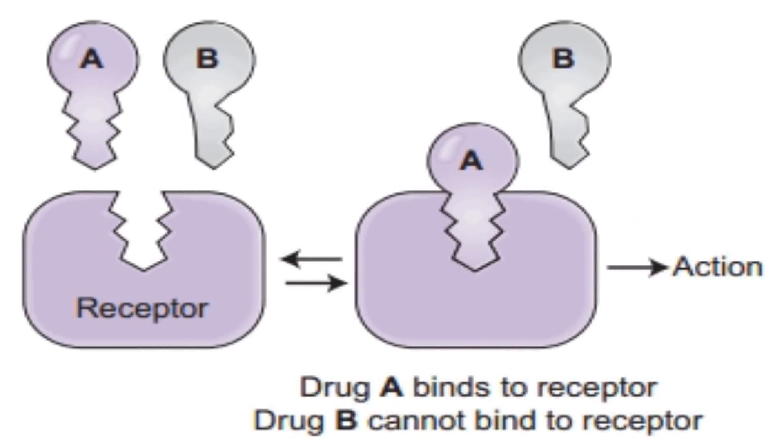And in order to do so, drugs must interact with specific receptors at the site of action. The interaction of receptors and drugs is like a lock and key — the receptor acts like a lock in which the drug molecule fits as a key, meaning the drug has a specific shape and structure that matches up with the shape and structure of the receptor of any specific cell.